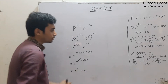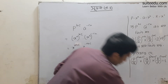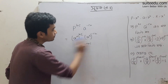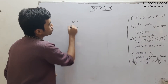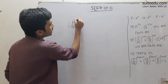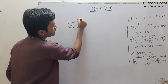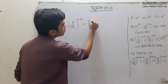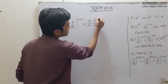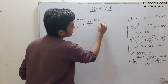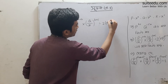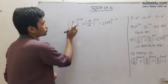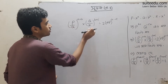The answer is 1. Now for part two: we have the expression P divided by Q to the power a plus B, into Q divided by R to the power B plus C, into R divided by P to the power A minus C.